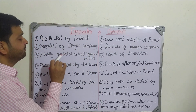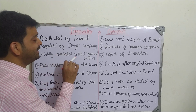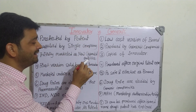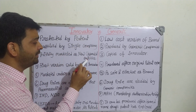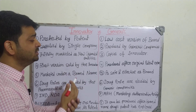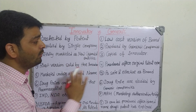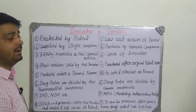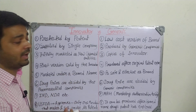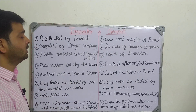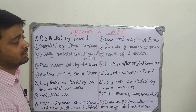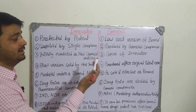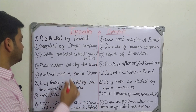Third point: the innovator or branded drug is initially marketed as a new chemical entity. Whereas the generic drug is a copy of the innovator — it may not have that particular name or that particular chemical branding. That is what makes it just a photocopy.